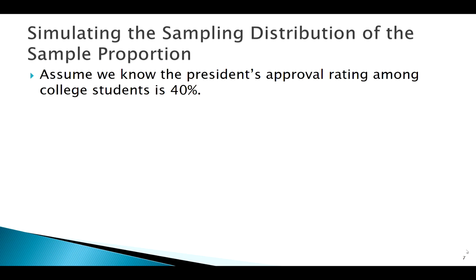So let's say, just for simplicity's sake, we know the president's approval rating, p, is equal to 40% or 0.4.